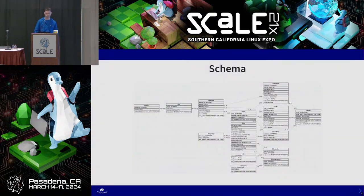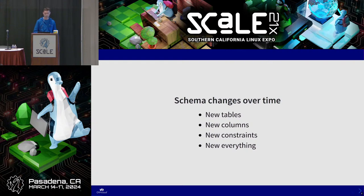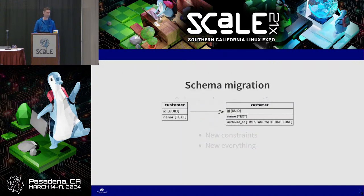So the basics. We need to talk about a schema. A schema is a set of relations — you can have multiple tables with foreign keys. Tables can have columns and this represents the schema. As business evolves, you have schema evolutions. You have to create new tables, new columns, new constructs, and new everything all the time.